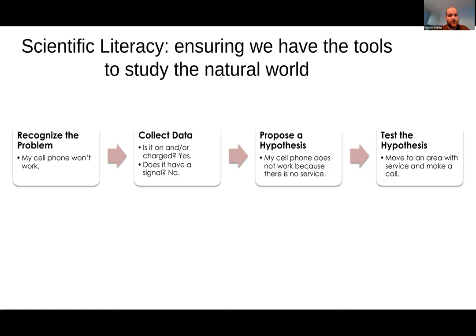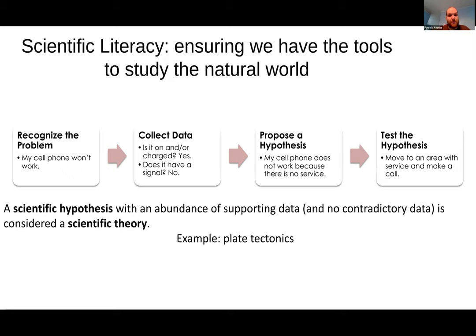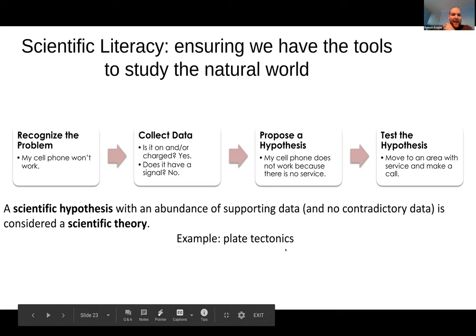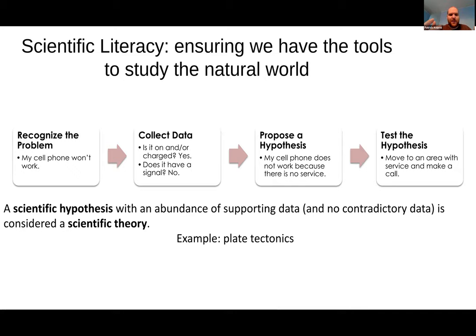A scientific hypothesis is simply a well-framed statement about an idea. For example: my cell phone won't work; I collect my data; my hypothesis is my cell phone does not work because there is no service; then I test it. That's all a hypothesis is — a well-stated question about a problem. As a hypothesis gains more supporting evidence and less contradictory data, it moves up to what we call a scientific theory. Examples include plate tectonics and evolution. What keeps these as theories is a large pool of evidence with very little contradictory data.